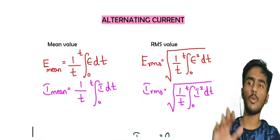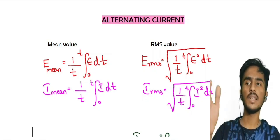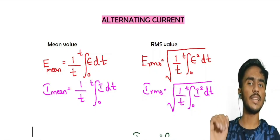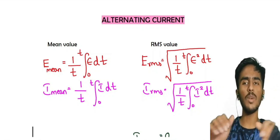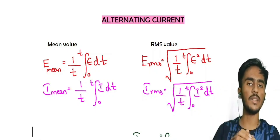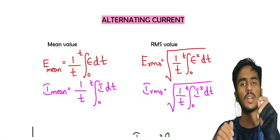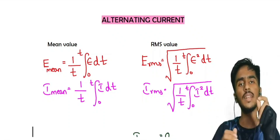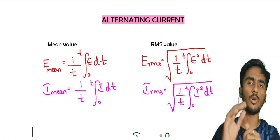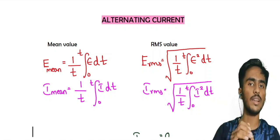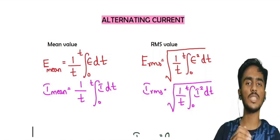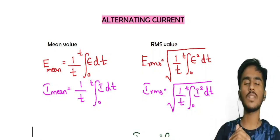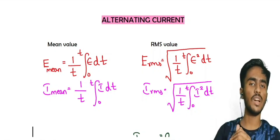The formula for E mean is: 1 by T, integration from 0 to T, of E dt. So the formula is a little difficult, but this application is very important. This formula is used. Next, we can look at the RMS value.